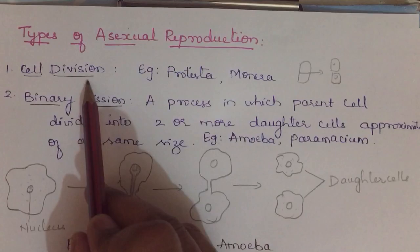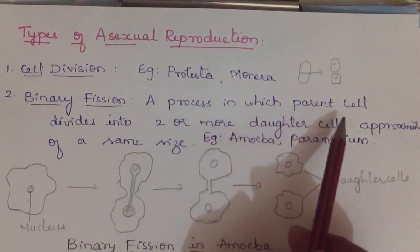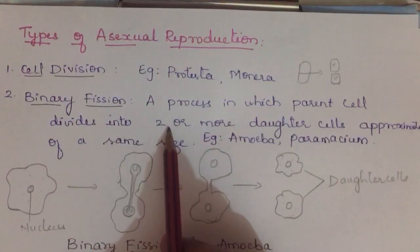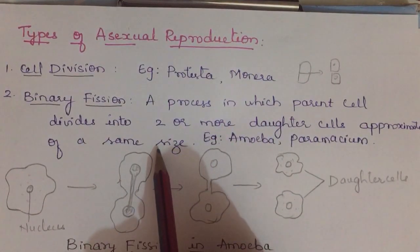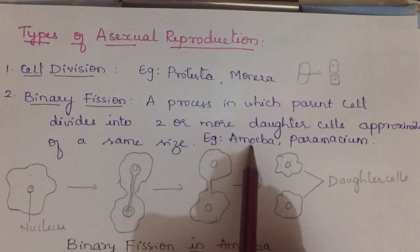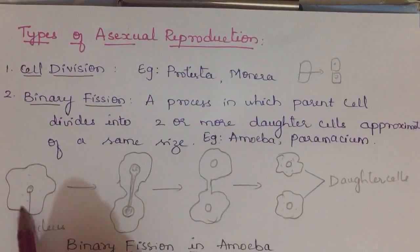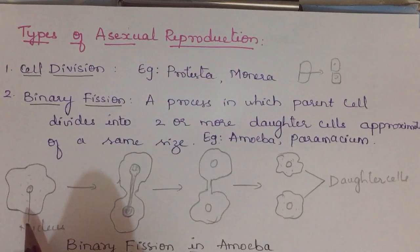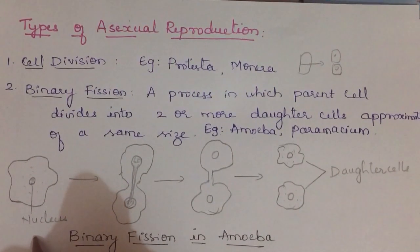The second type is binary fission: a process in which the parental cell divides into two or more daughter cells of approximately the same size. Examples include amoeba and paramecium.